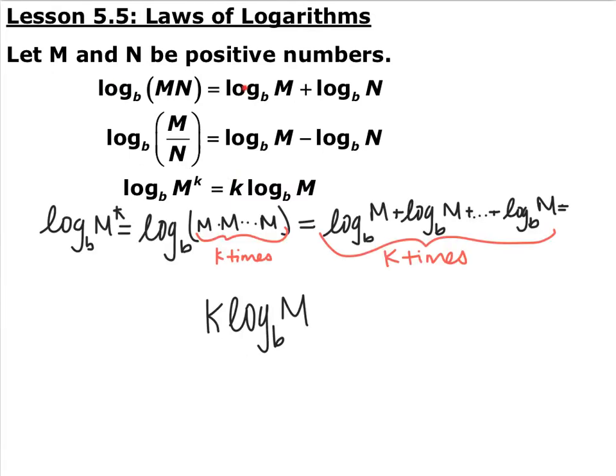This is derived just from the multiplication one above. Exponentials are just repeated multiplication. So m to the k is the same thing as m times itself k times, which means you can split it up into log base m added to itself k times, which simplifies down to this.